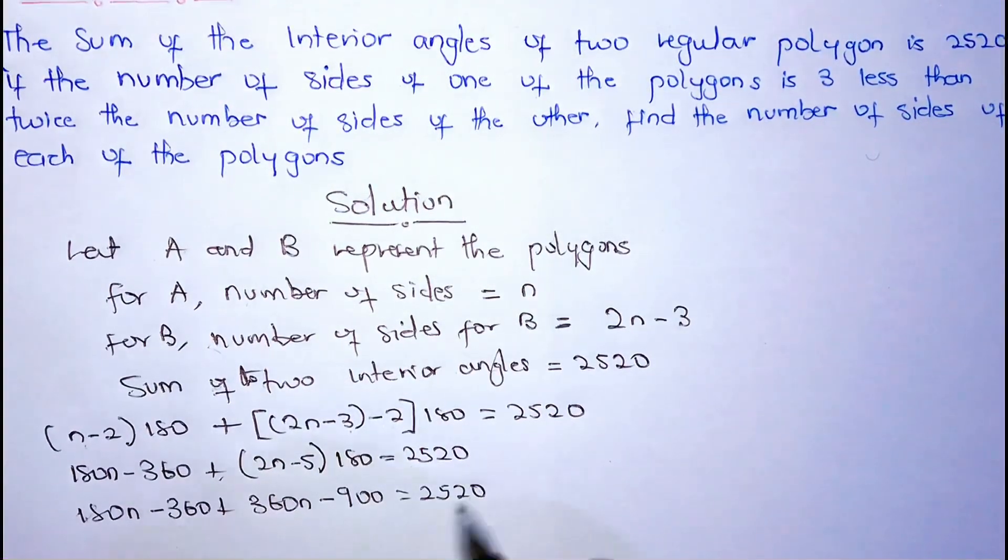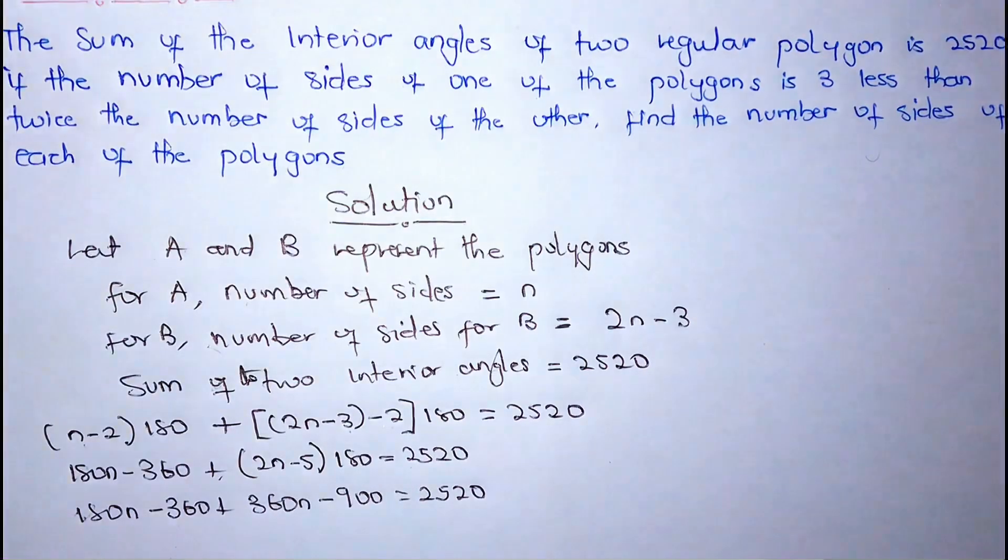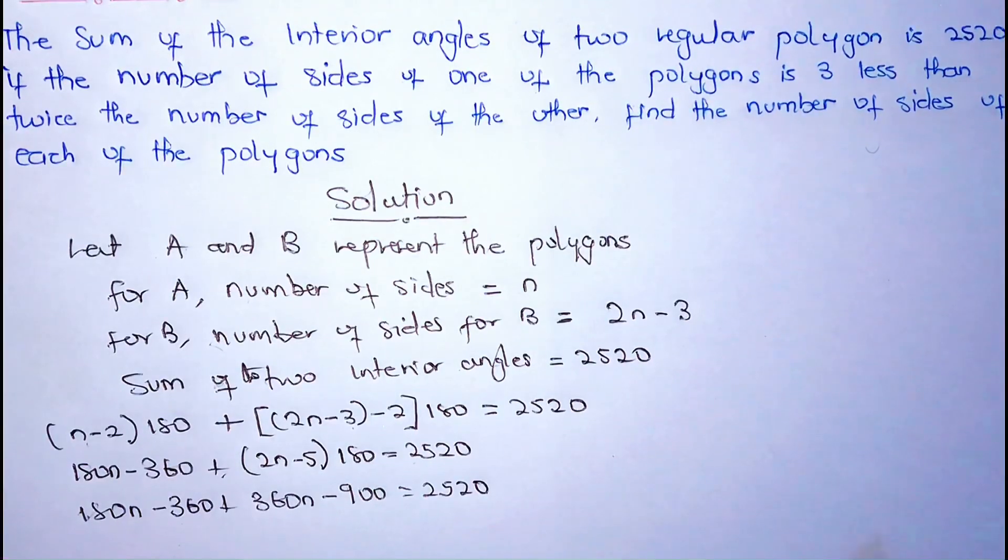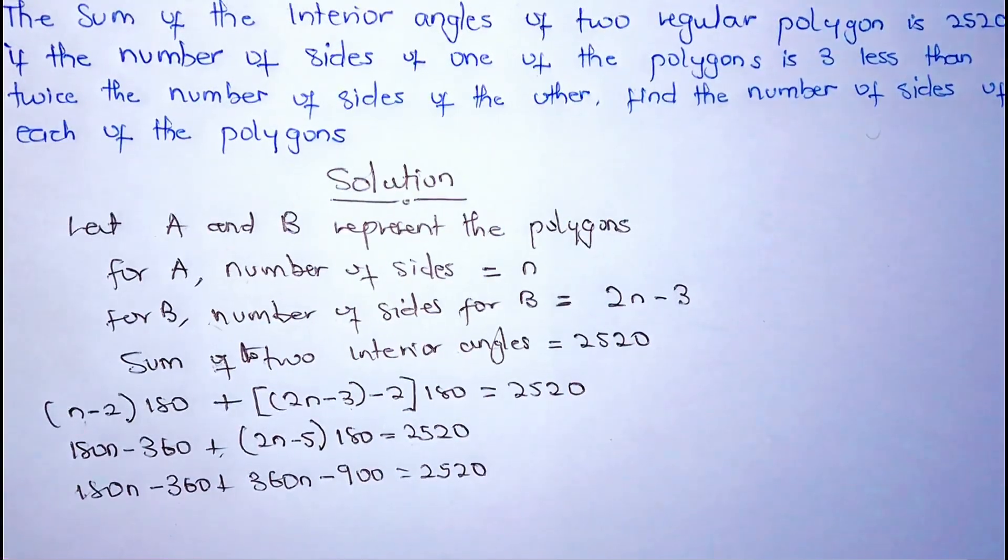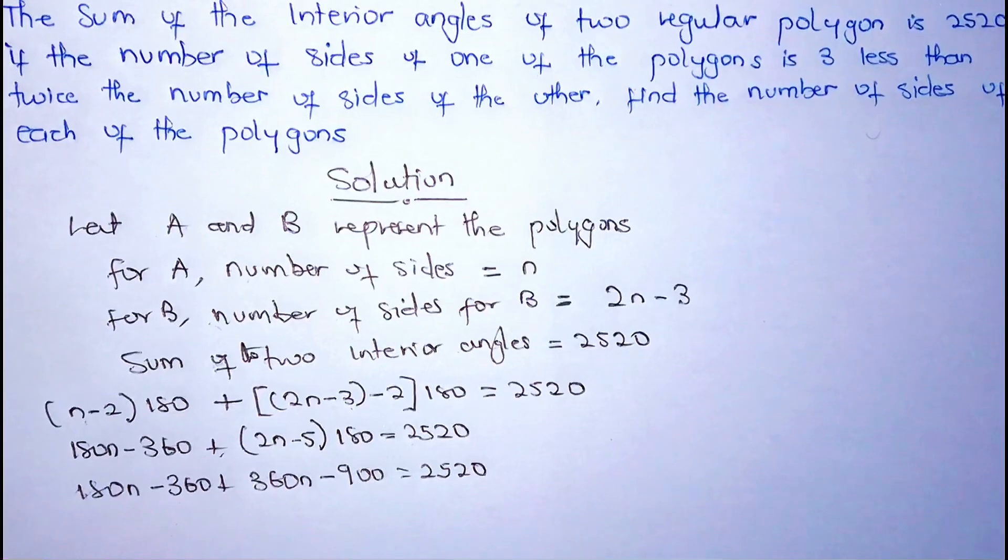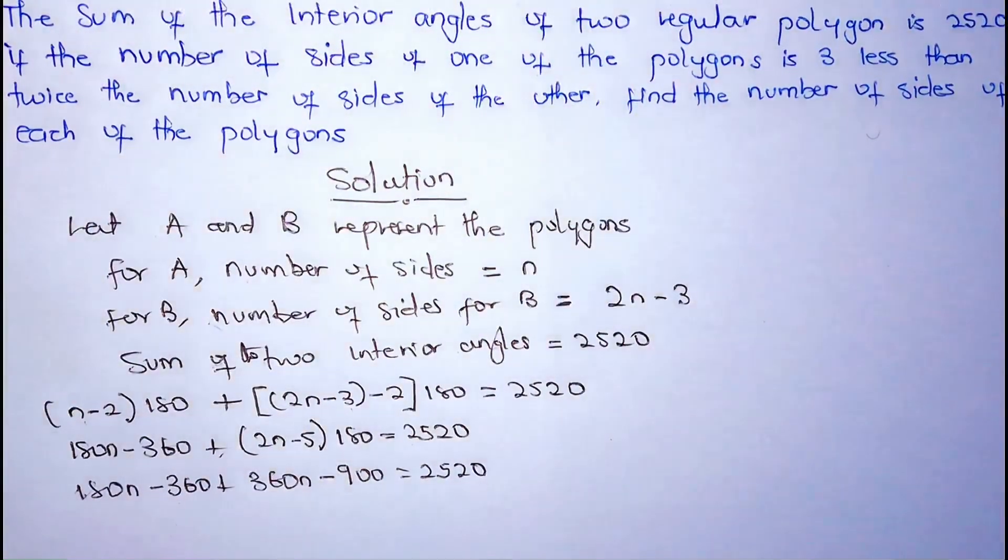So we are going to get 180N, and 180N plus 360N is going to be 540N.